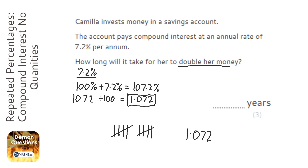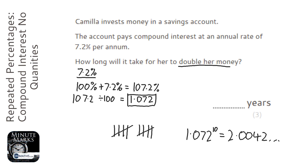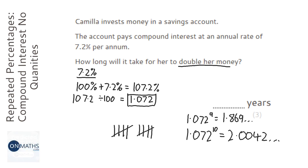I can verify this by calculating 1.072 to the power of 10, which gives 2.00. I can also show the examiner that 1.072 to the power of 9 gives 1.869, which didn't quite make it to double. So the answer is 10 years, because it takes multiplying by 1.072 ten times to get an answer of 2 or more.